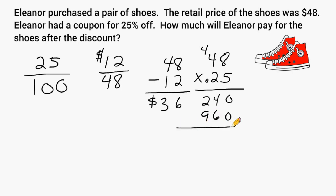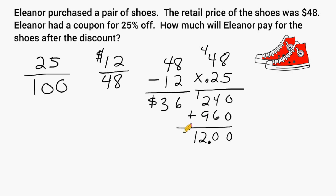Then we add all of our digits together. This column is 0, this column is 10, carry our 1, and the last column is a total of 12. Don't forget, if you have a decimal in the problem, you have to put it in the proper position in your answer. So by multiplying 25 hundredths by 48, we can see that the discount would be $12, but we still have to subtract that discount from 48.